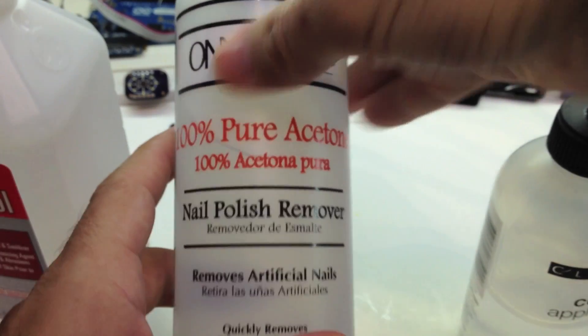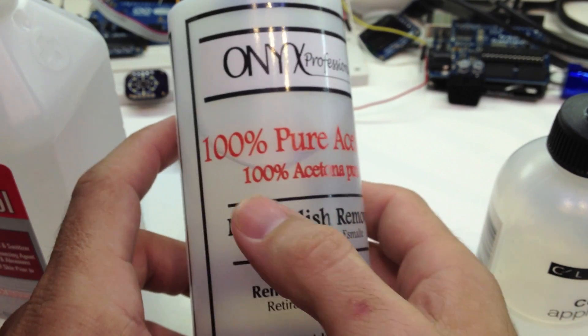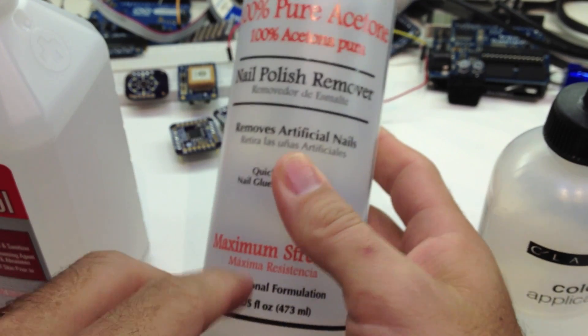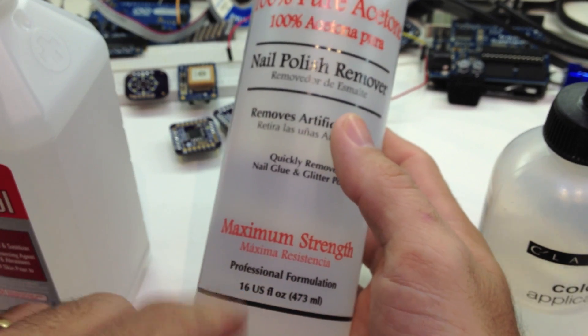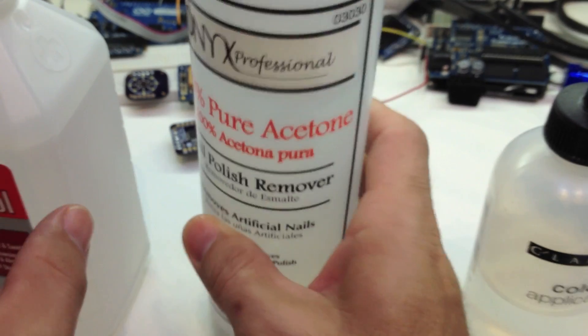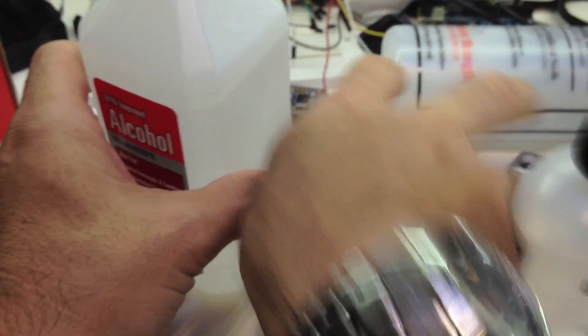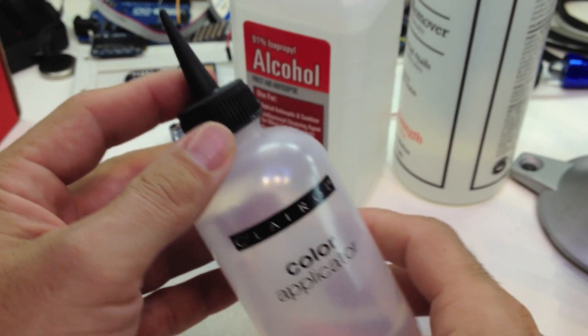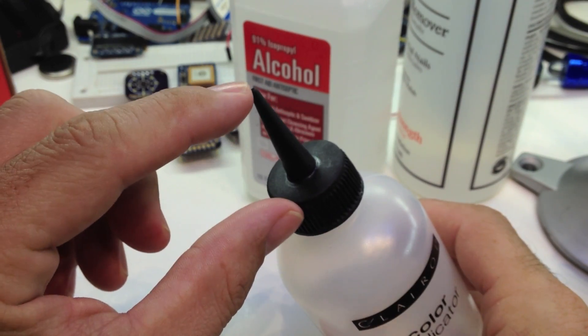And then the other thing I got was nail polish remover. That's 100% pure acetone, it has no scents or anything in it like that. Also 16 ounces, I think this cost me $2. I then trotted over to the beauty store, and I got myself a color applicator, which is basically just a squirt bottle with a real fine tip there.